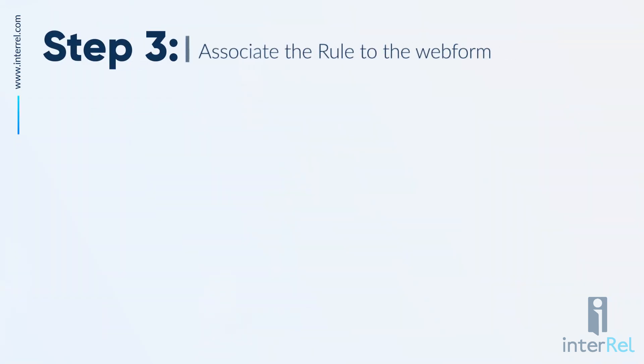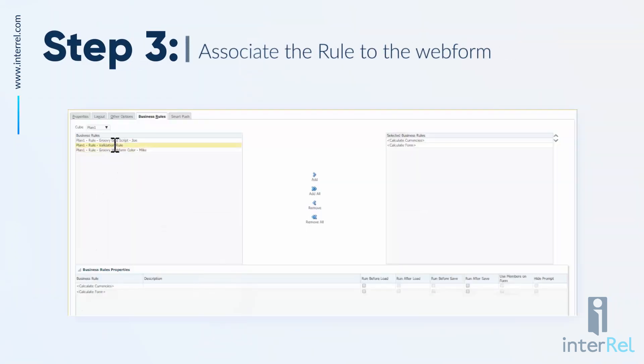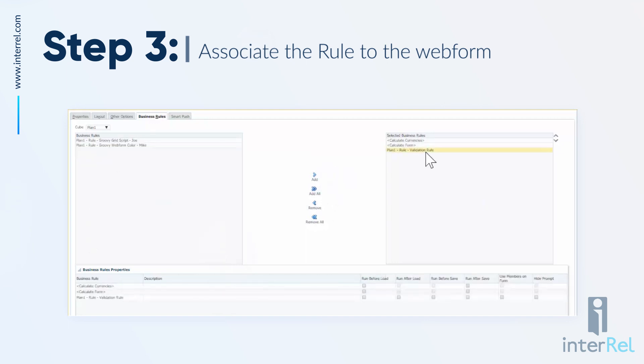In our third step we associate the business rule to the web form. We find the rule that we just created, add it to the form, select run after load, and then select finish to save the form.